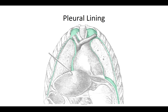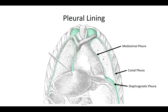Parietal pleura can further be defined based on its location within the thoracic cavity. The majority covers the thoracic cage anteriorly, laterally, and posteriorly, and is referred to as costal pleura. The inferior portion lining the diaphragm is known as diaphragmatic pleura. The medial portion covers the lateral portions of the pericardial sac and is referred to as mediastinal pleura. Superiorly, the cervical pleura covers the apex of the thoracic cavity and projects above the clavicle. Because of its close association with the clavicle and subclavian vein, this region is particularly susceptible to penetrating trauma from bone fragments during a clavicular fracture or from needle sticks from an improperly placed central line.